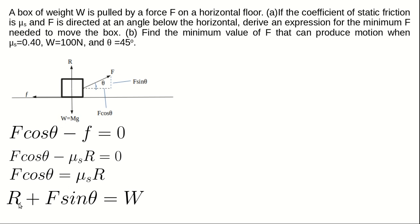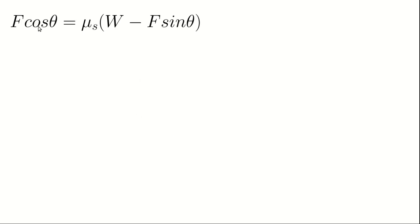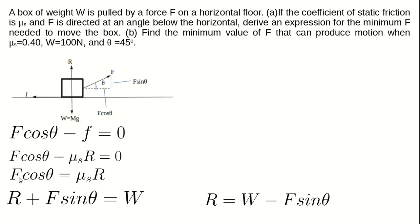We now have two equations: equation 1, F cosθ = μsR, and equation 2, R = W minus F sinθ. We make R the subject from equation 2 so we can substitute into equation 1. Substituting R = W minus F sinθ into equation 1 gives: F cosθ = μs(W minus F sinθ).